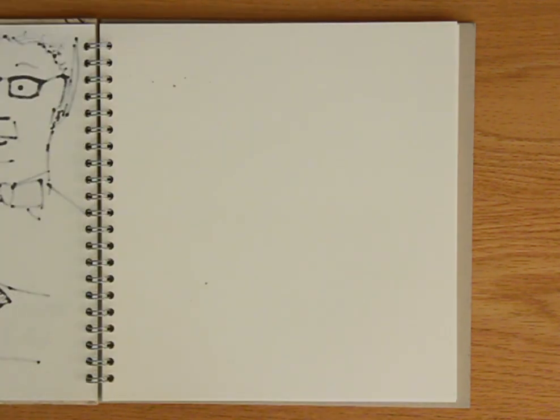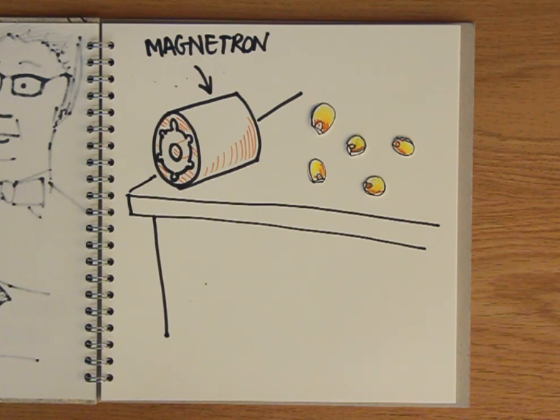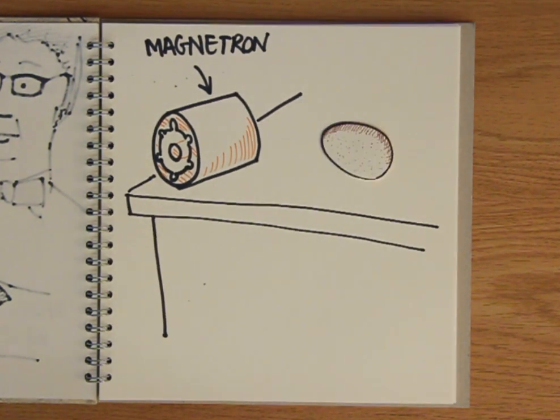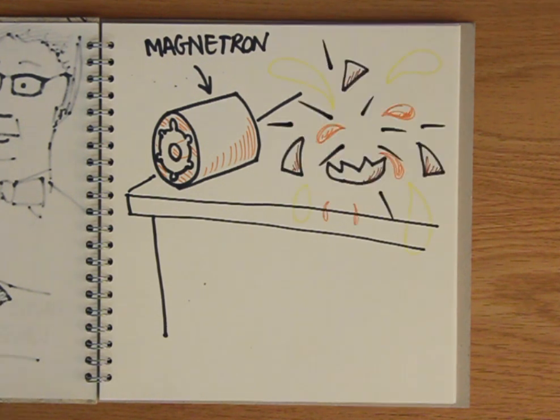Intrigued, he placed popcorn kernels near the microwave producing unit, known as a magnetron tube, and was rewarded with a flurry of pops. Another experiment involving an egg was a bit more messy, but this is what gave Spencer the idea of what microwaves could do in the kitchen.